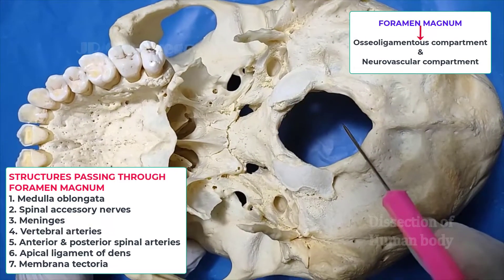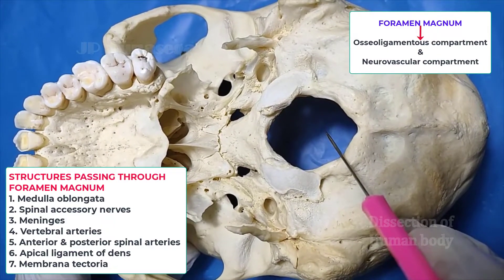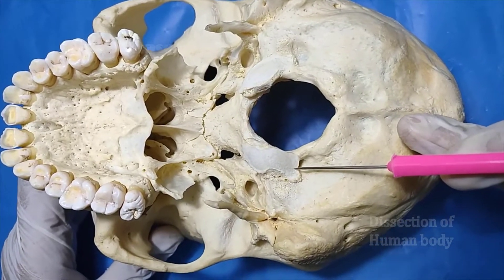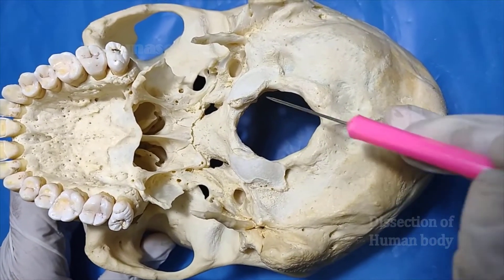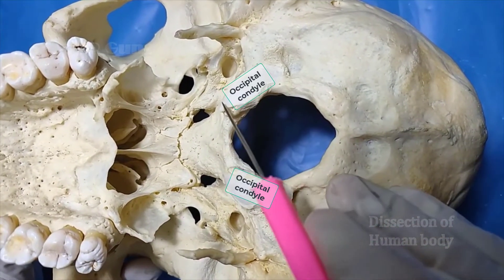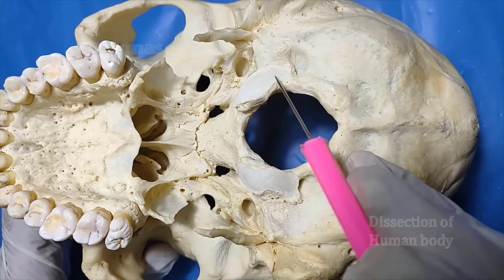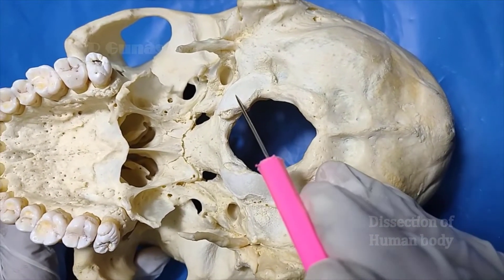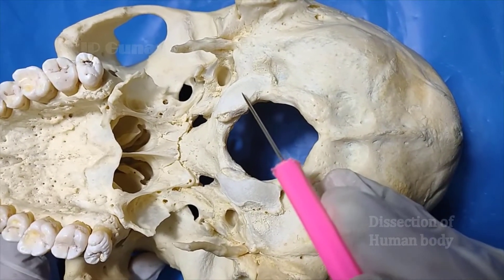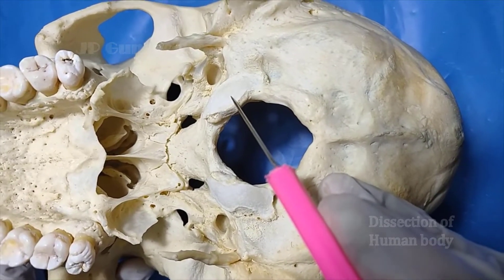The neurovascular compartment mainly transmits the medulla along with its meninges and vertebral vessels. If you see the anterolateral aspect of foramen magnum, you can see two large masses called the occipital condyles. The inferior surface of the occipital condyle is a large oval convex facet that articulates with the superior concave facet present in the lateral mass of the atlas, forming the atlanto-occipital joint.